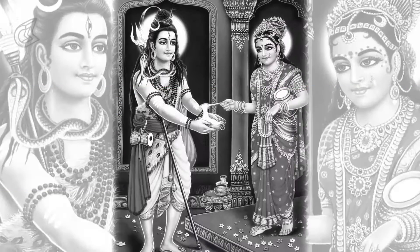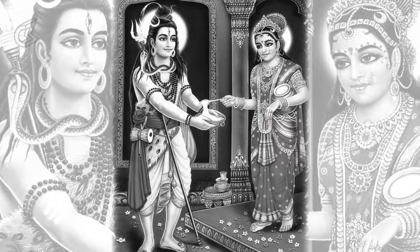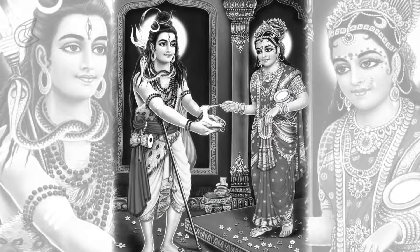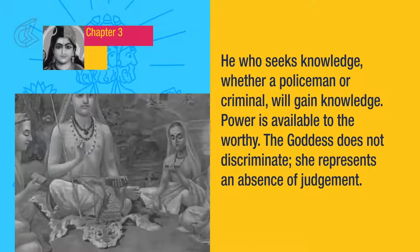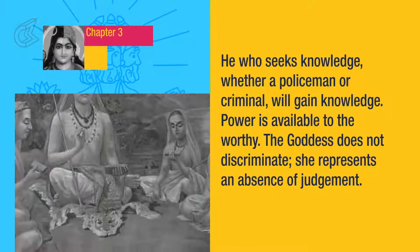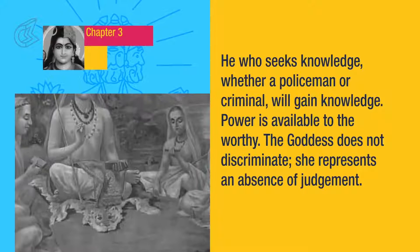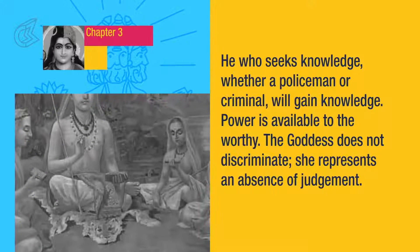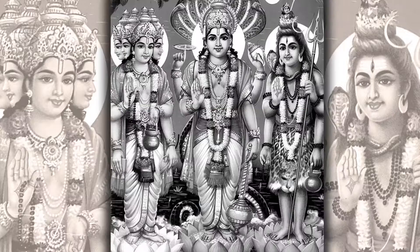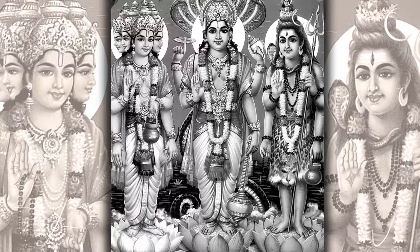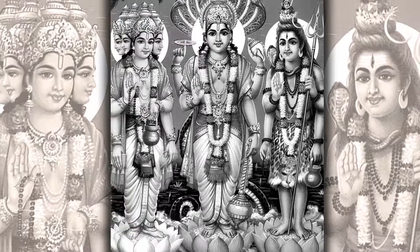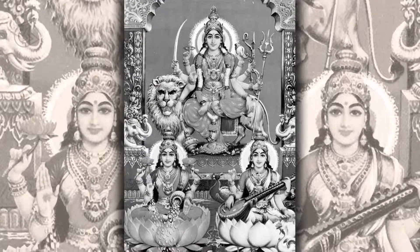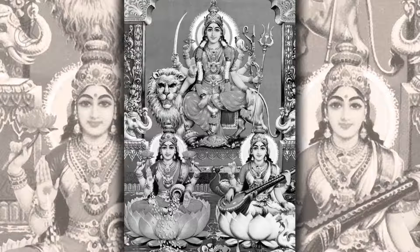Wealth, knowledge, and power do not discriminate between the rich and the poor, the beautiful and the ugly, the upper classes and the lower classes. A bowl of rice will satisfy the hunger of a king as well as that of a beggar. He who seeks knowledge, whether a policeman or criminal, will gain knowledge. Power is available to the worthy. The goddess does not discriminate; she represents an absence of judgment. The capacity to judge is embodied in male forms. God creates, sustains, and destroys society — he is the fountainhead of values, morality, and ethics. The goddess can be measured, but the measurer and the measurement scale are created, sustained, and destroyed by God.